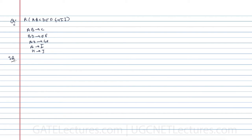Every relational database is by default in 1NF, so we have to check whether the above relation is in 2NF or not. First, identify the candidate keys for this relation. Go to the right-hand side of each functional dependency and see what attributes are not present there. C, E, F, G, H, I, and J are present on the right-hand side. The three attributes not present are A, B, and D.